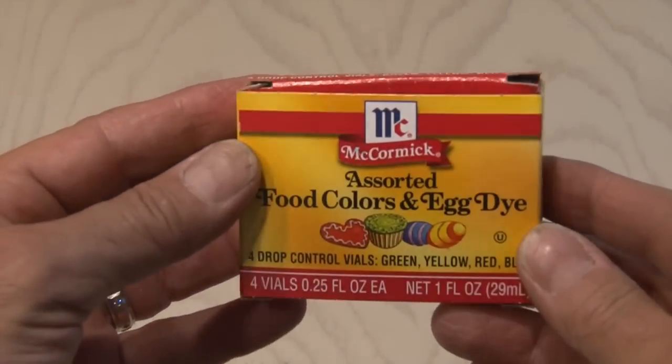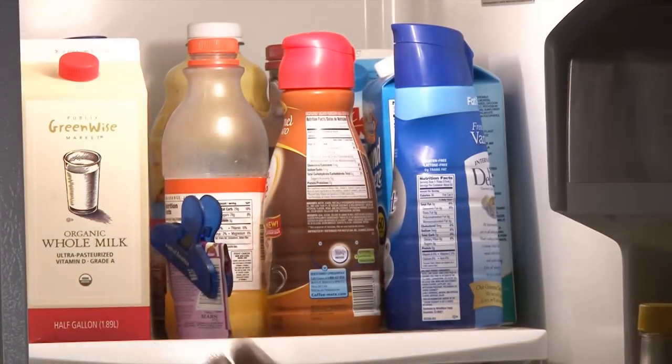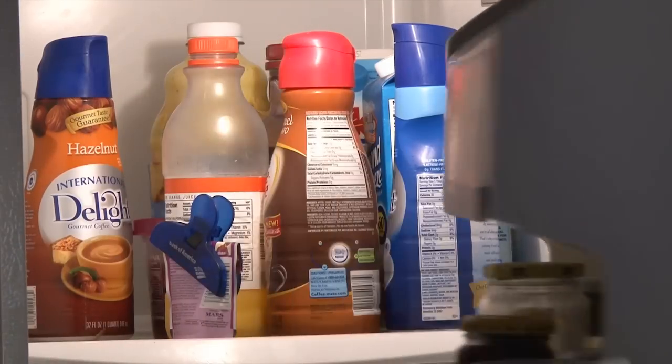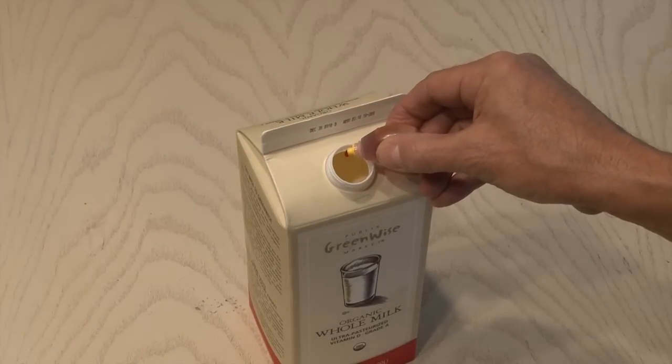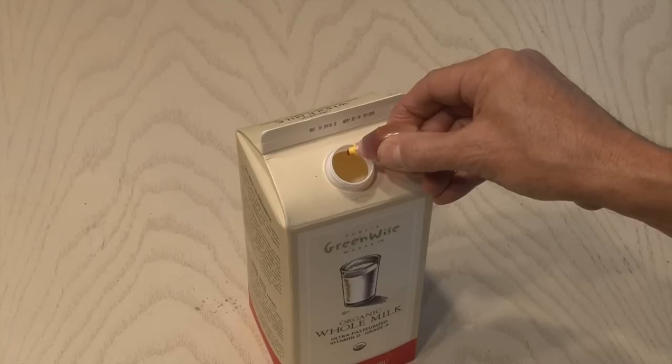Number 4: Sour Milk. There's so many cool pranks you can play with food coloring. This is one of my favorites. What we're looking for is some milk. You want it in a container that's not clear so you can't see what's inside. For this prank, we're going to use some yellow food coloring. Now I know in the video it looks red, but it's actually yellow.